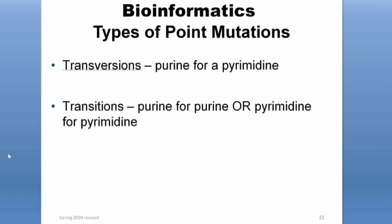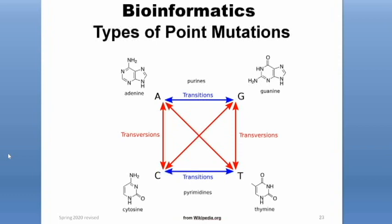This slide is important, so make sure you know this. For point mutations, you can have transversions, which is where you have a purine replaced by a pyrimidine or a pyrimidine replaced by a purine. A transition is where you have a purine replaced by a purine, or a pyrimidine replaced by a pyrimidine. The figure here shows transitions — purine to purine — and transversions — purine changed into a pyrimidine.